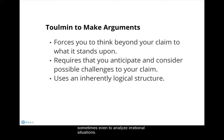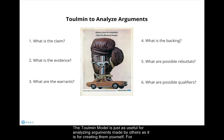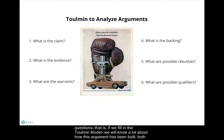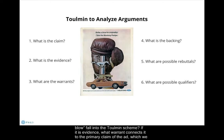The Tullman model is just as useful for analyzing arguments made by others as it is for creating them yourself. For instance, look at this advertisement here for a 1967 Ford Mustang. If we can determine the answers to these six questions — that is, if we can fill in the Tullman model — we will know a lot about how this argument has been built, both in terms of its successes and its faults. In this example, where would the boxing glove image and phrase 'strike a blow' fall into the Tullman scheme? If it is evidence, what warrant connects it to the primary claim of the ad, which we can assume is 'buy a Mustang' or at least 'think about buying a Mustang'?